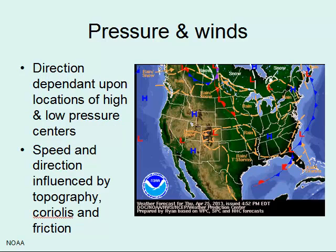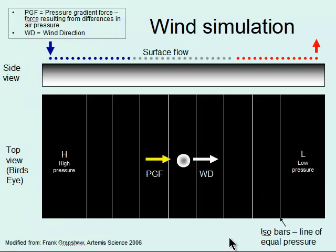Here we've got a more complex view. We have multiple highs and lows spread across the U.S., and we're going to have air moving from high to low throughout those different zones, so we can get pretty complex situations. To simplify things and give you an idea of how these forces interact, we're going to break it down.